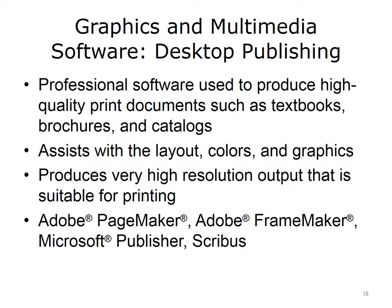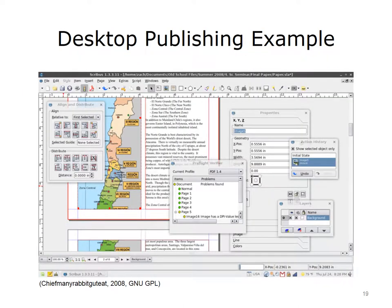Graphics and multimedia applications are used to create and edit images, videos, audio and even video games. Desktop publishing software is professional grade software used to produce high quality print documents such as textbooks, brochures and catalogues. It provides far more powerful formatting and higher resolution output than a word processor can. There are several options available including Adobe PageMaker, Adobe FrameMaker and Microsoft Publisher. Scribus is an open source option. This is a screenshot of the desktop publishing software Scribus. Notice the complex formatting and layout tools — they are far more powerful and precise than the options available in a word processor.